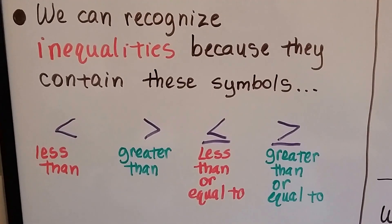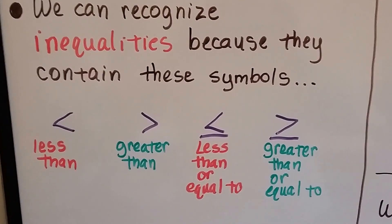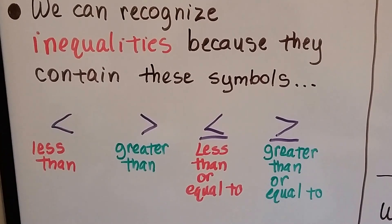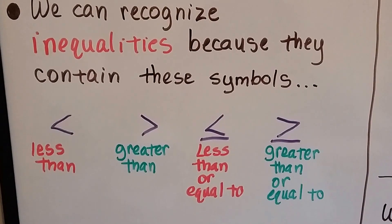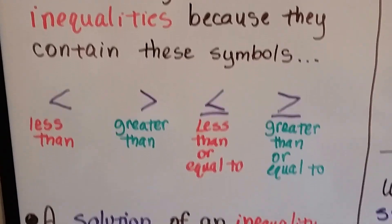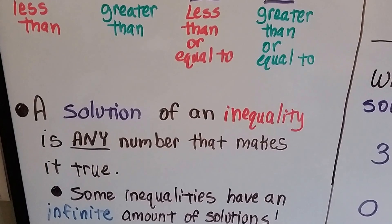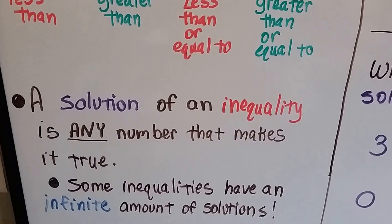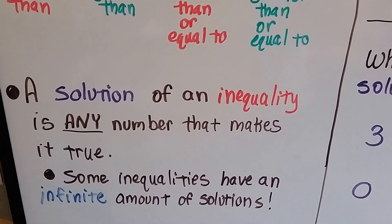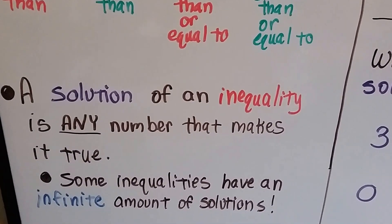There's a less than, a greater than, a less than or equal to — that has the bar underneath it from an equal sign — and a greater than or equal to, which also has the bar from an equal sign underneath it. A solution of an inequality is any number that makes it true, and some inequalities have an infinite amount of solutions.